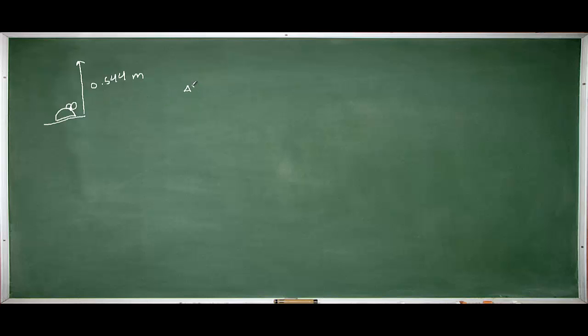So right off the bat the question is telling us that the vertical displacement is 0.544 meters. And we're going to assign a positive sign to that displacement because the armadillo travels upward relative to where it started. Had it jumped downward we would have put a negative sign for the displacement.